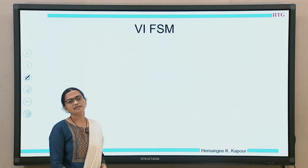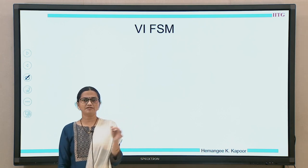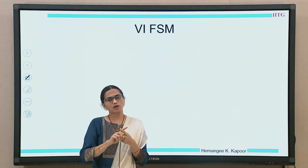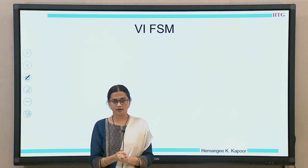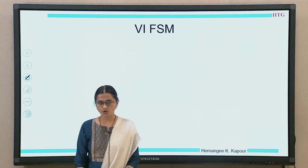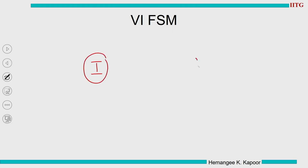Now let us start drawing the finite state machine for the VI protocol. We have two states: I for invalid and V for valid. The block can be in one of these two states only. There is no state called dirty because it is a write-through cache and every update is anyway going onto the bus to main memory.